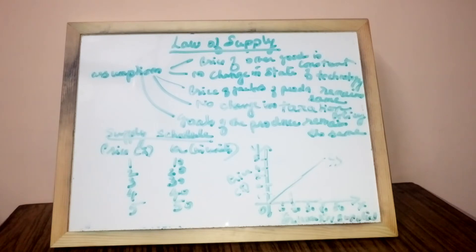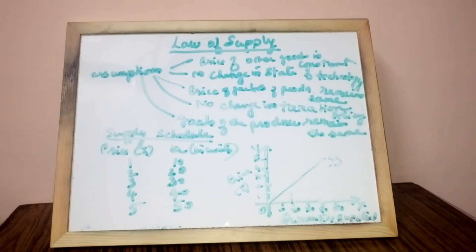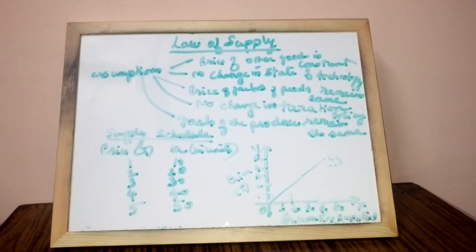The supply of a commodity rises as the price rises due to the profit motive. Producers aim to make maximum profits, so when the price of a commodity increases without any change in cost of production, it raises profits. As a result, the producer increases the supply of the commodity by increasing production.